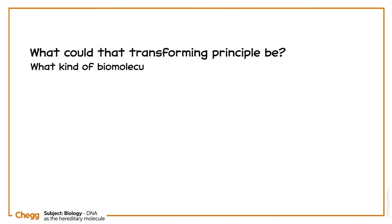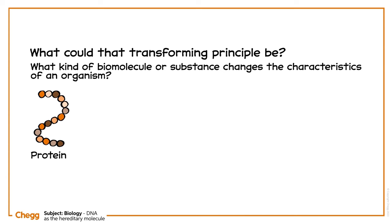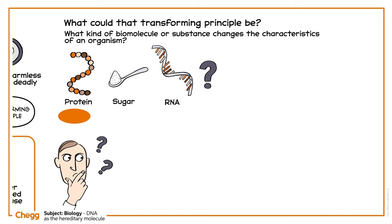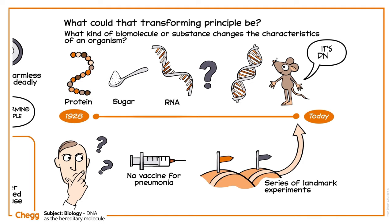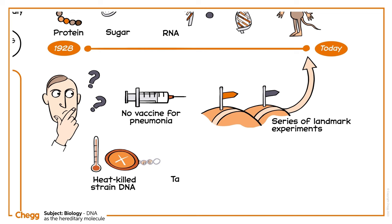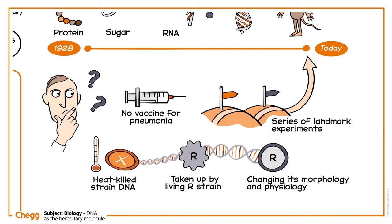What kind of biomolecule or substance changes the characteristics of an organism? A protein? A sugar? RNA? Though Griffith didn't have all the answers and never developed that vaccine for pneumonia, his experiment was the first in a series of landmark experiments. Today we know the answer — it's DNA. The DNA of the heat-killed strain survived the heating and was taken up by the living R strain, changing its morphology and physiology. But it wasn't until 16 years later that DNA was identified as the transforming principle in another milestone experiment building on Griffith's work.